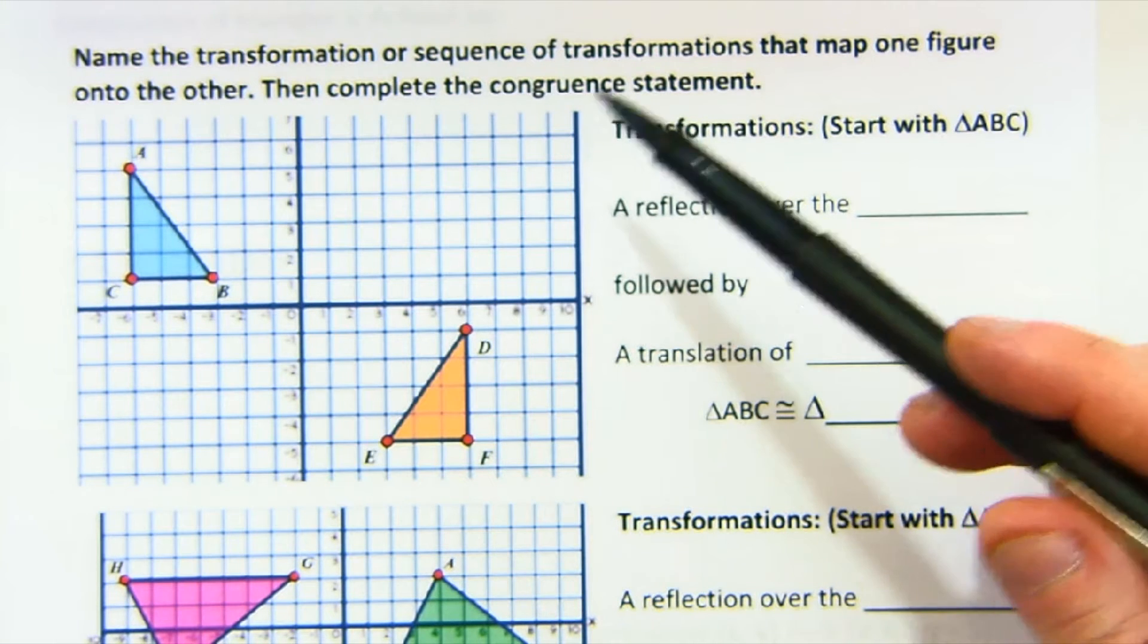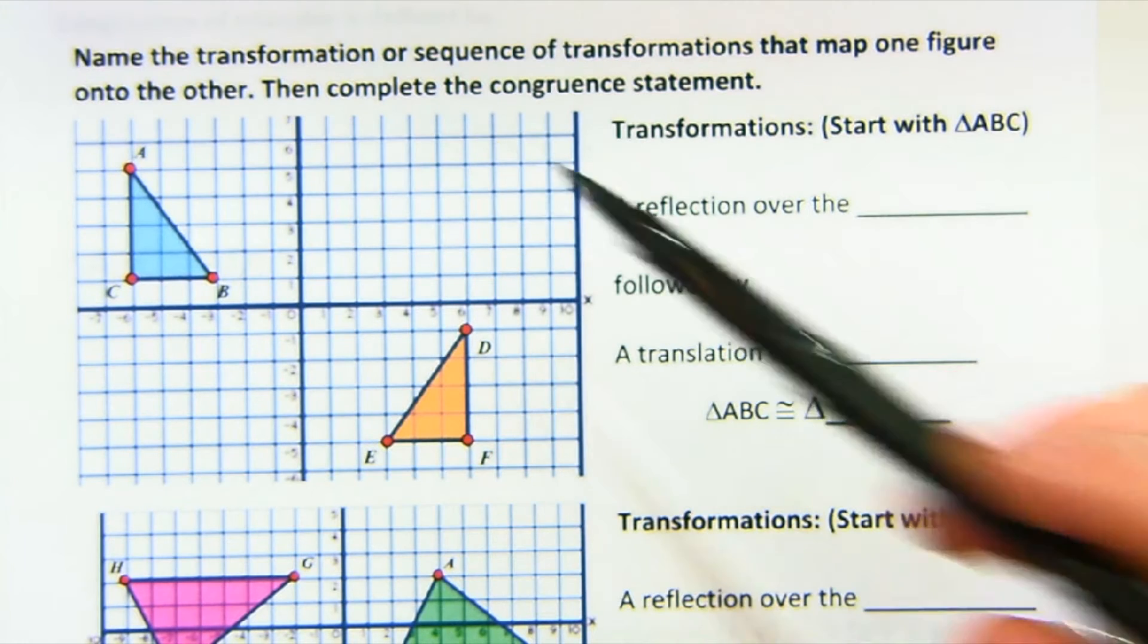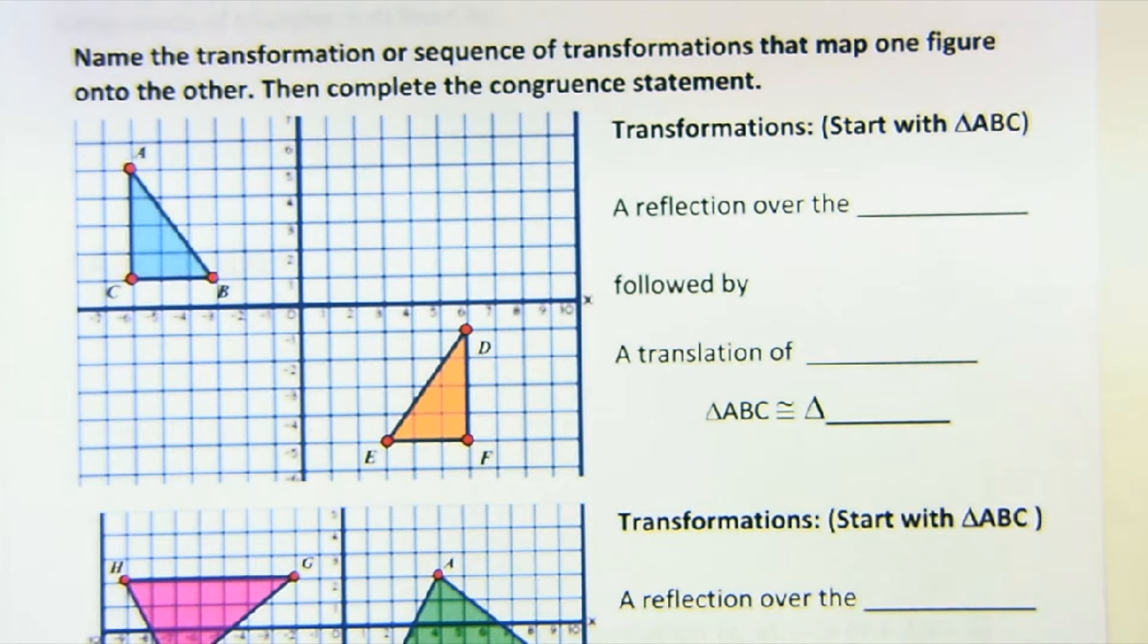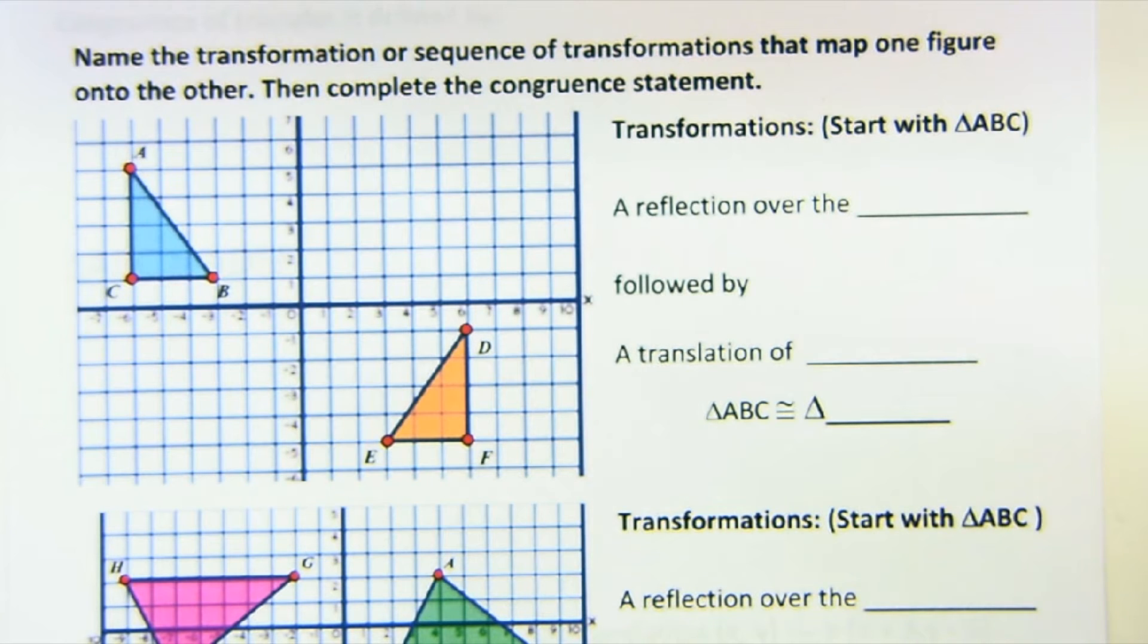This says name the transformation or sequence of transformations that map one figure onto the other then complete the congruence statement. Now there's sometimes often more than one way to do this but in this case it looks like they want us to do the reflection first.